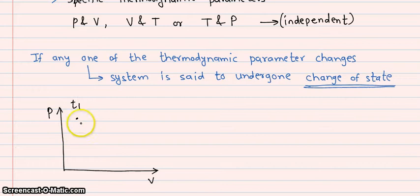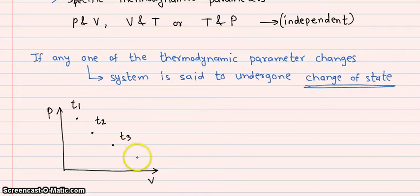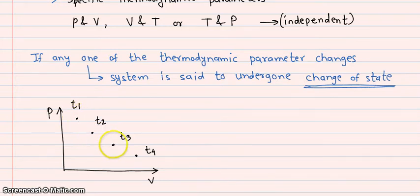For example, on a pressure-volume graph, at time t1 we have a certain state. After a certain duration of time, pressure decreases but volume increases — this is state 2. Then further pressure reduces but volume increases — this is state 3. Then at t4, pressure further reduces but volume increases. So your system is changing state from 1 to 2, 2 to 3, 3 to 4.